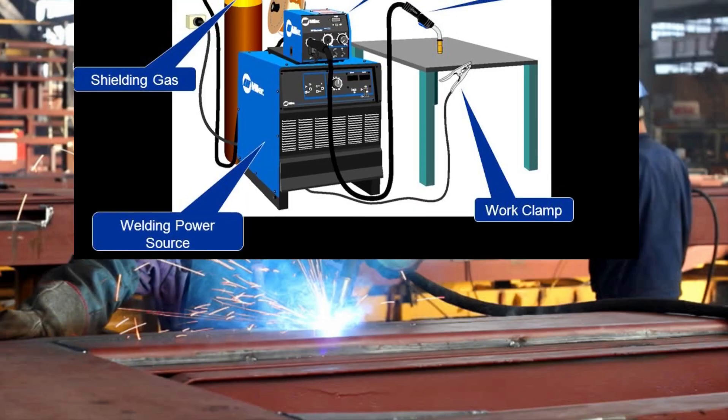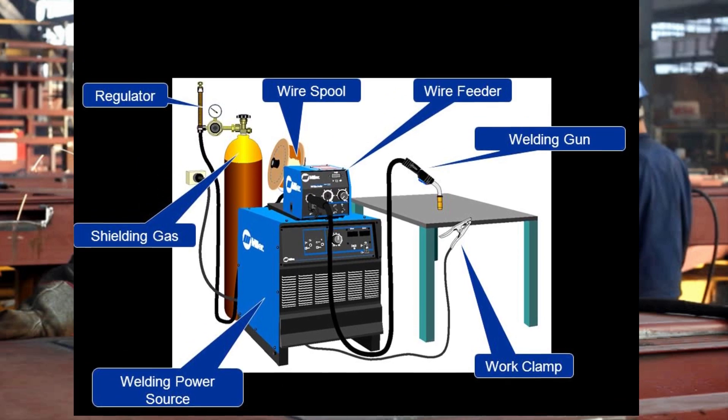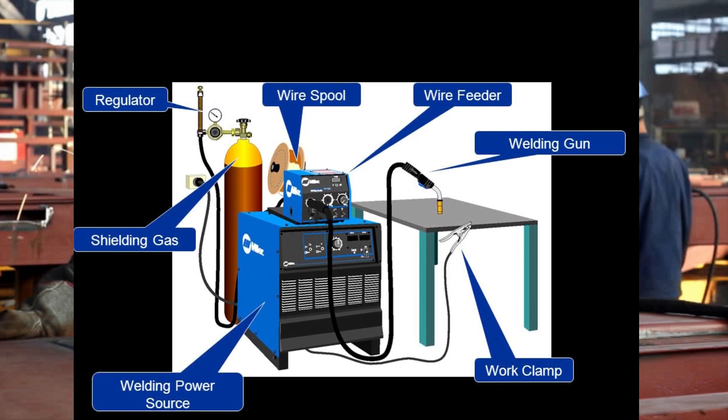The last equipment is the regulator. As the name implies, it is used to regulate the flow of inert gases from the cylinder. The inert gases are filled into the cylinder at high pressure and cannot be used at this pressure, so a regulator is used between the gas supply to lower the gas pressure according to welding requirements.